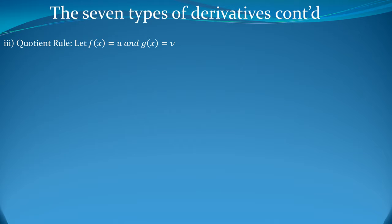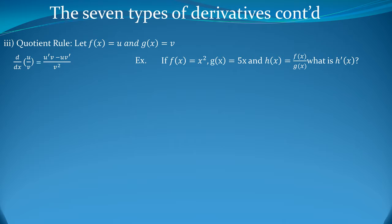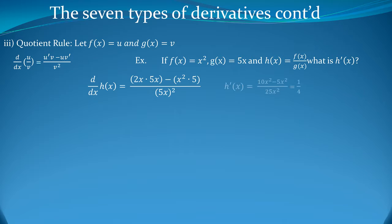Now for the quotient rule. Let f(x) equal u and g(x) equal v. The quotient rule states: the derivative of u/v equals (u′·v − u·v′) over v². For example, if f(x) = x², g(x) = 5x, and h(x) = f(x)/g(x), what is h′(x)? Plugging in: (2x·5x − x²·5) over (5x)². Simplifying, we get (10x² − 5x²) over 25x², which equals 1/5, and all the x's cancel.